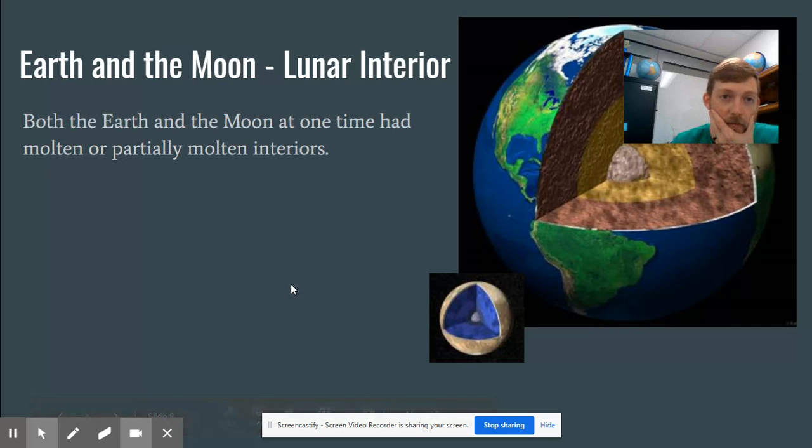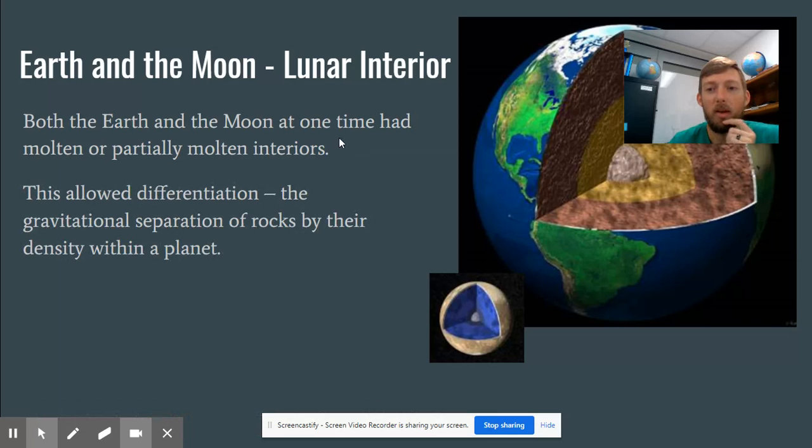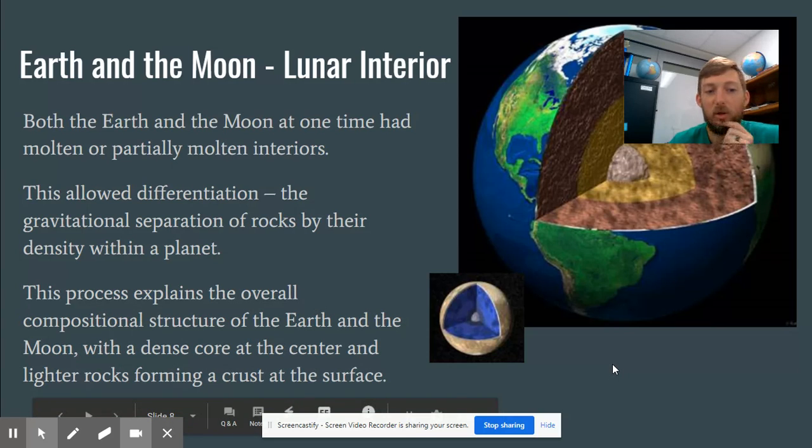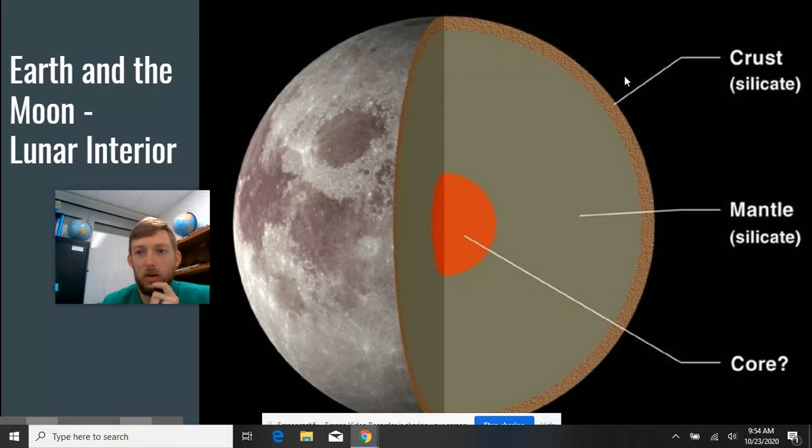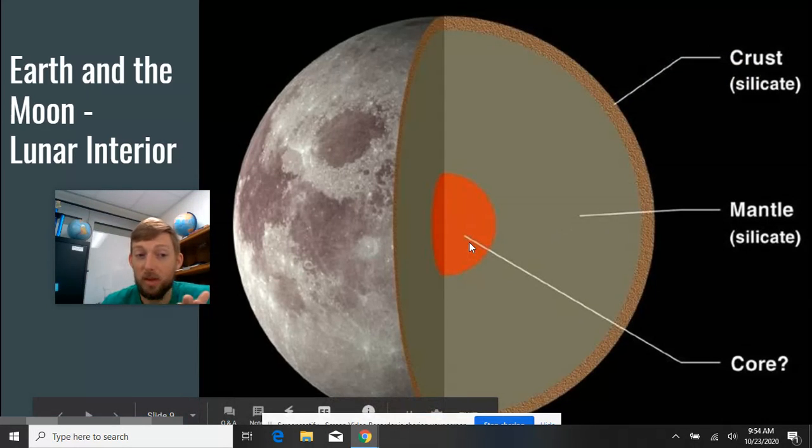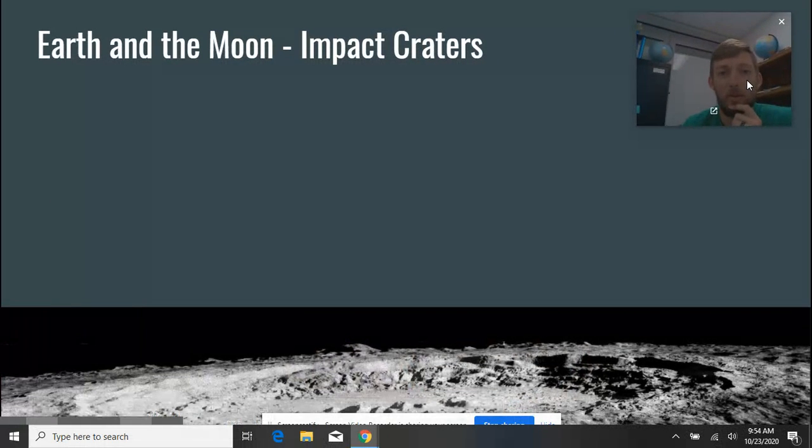So with the forming, let's talk about what the moon is actually made of. So at some point, they both had molten interiors, which allowed for gravitational separation of the rocks by the density within the planet. It explains the overall composition structure of the Earth and the moon, and the crust at the surface. So you can see from these pictures, the core, the molten, or the solid core would be this middle lighter brown piece and the gray piece on here. And then the yellow would be the molten around it. So we have this thin layer of the alleric crust, which is a silicate, the mantle. And then we think there's a core. Again, I'm not sure that that's actually been proven yet.